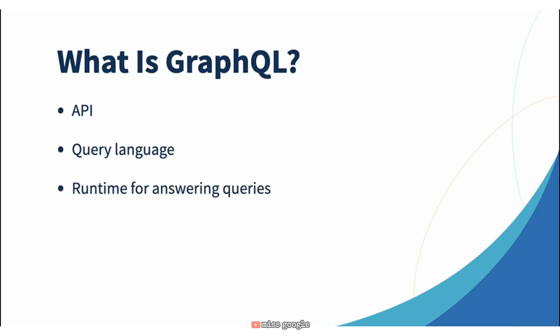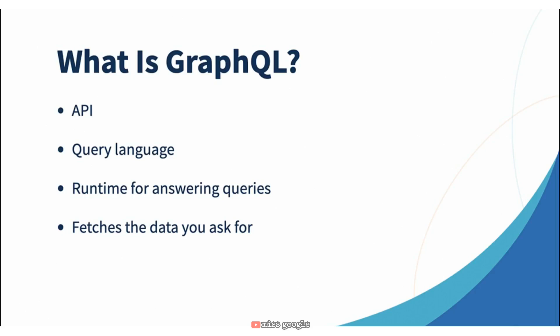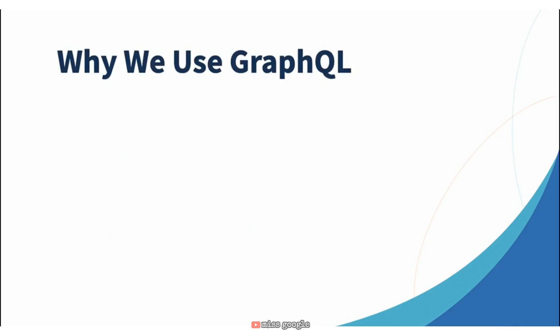GraphQL not only is the API and the language to query it, but it also provides a running mechanism to fetch and serve data. One of the coolest aspects of GraphQL is that due to its graph nature and how the query works, you can ask the API for exactly what you want and structure it how you want it — and you will be rewarded with the data exactly how you need it, whether you traverse the graph or request a single type.